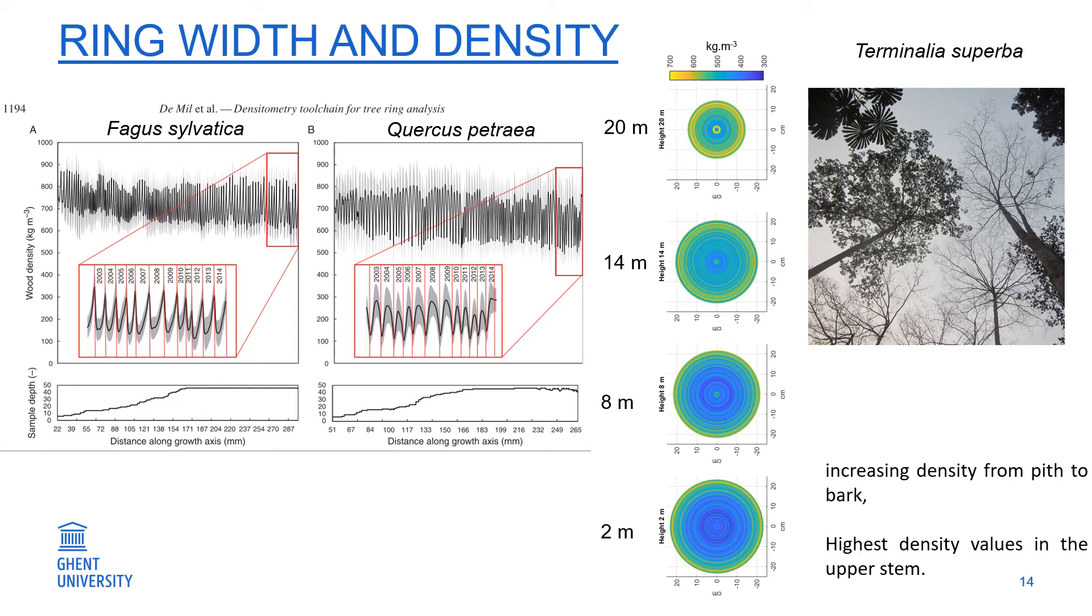We can show both the radial variation and the axial variation from the bottom of the tree to the top of the tree and see how this wood density varies. Here we see an increase from pith to bark and an increase from bottom to top.